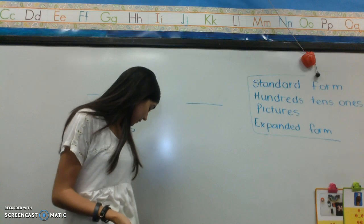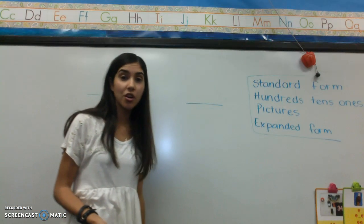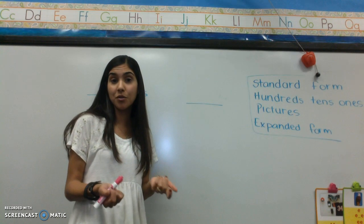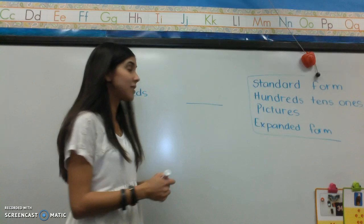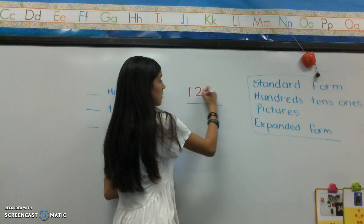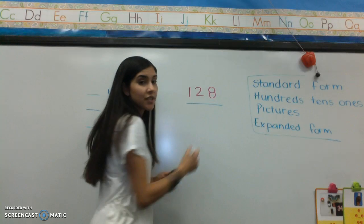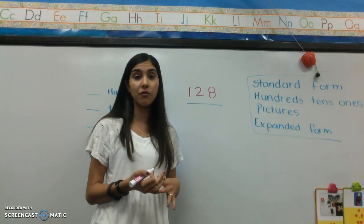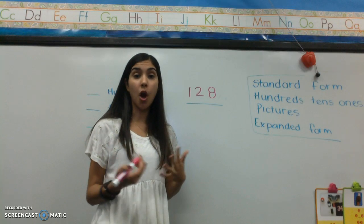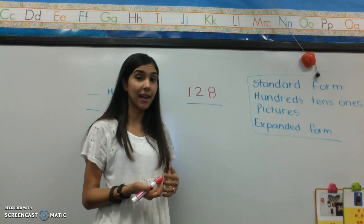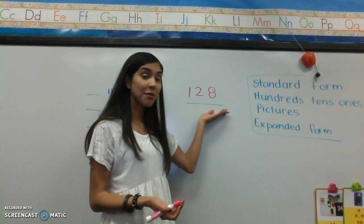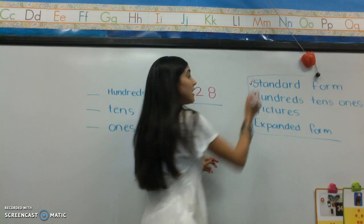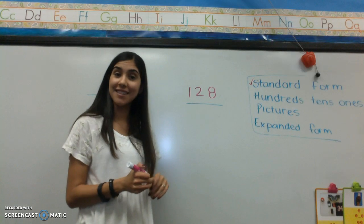So we're just going to jump right into things. We are going to start off by representing a number in standard form. I'm going to do the number 128. So 128 looks just like that and I've just written the number in standard form. Standard form is the most common way that numbers are represented. It's the easiest one to do, and I've written my number 128, so I'm going to go ahead and check off that I have written my number in standard form.